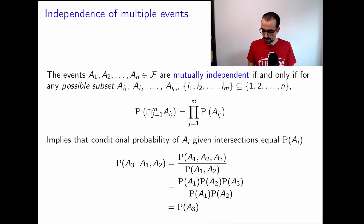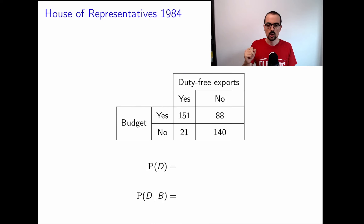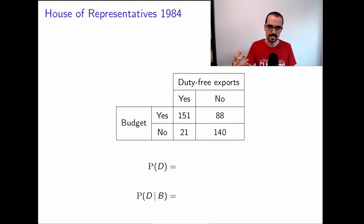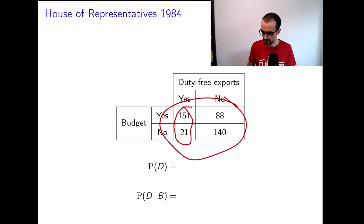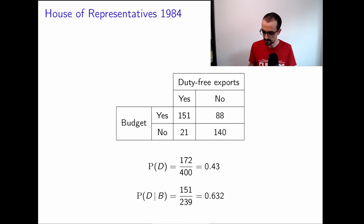Now let's look at a real dataset — the House of Representatives voting data from the previous video on estimating probabilities. Congressmen voted on different issues. We computed the empirical probability of voting yes on duty-free exports: 172 yeses out of 400 total gives a probability of 0.43. When we computed the conditional probability of D given B (budget), the probability changed a lot.